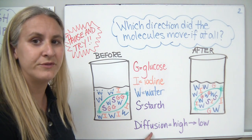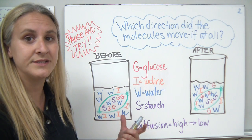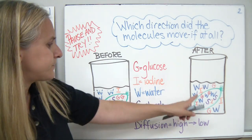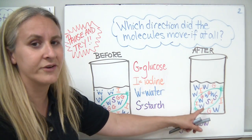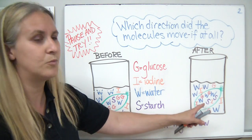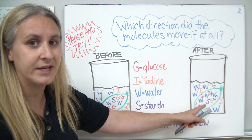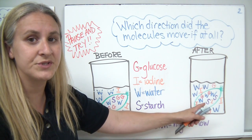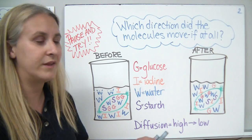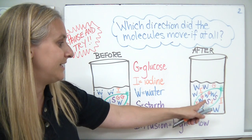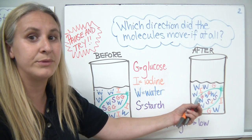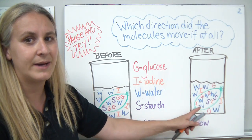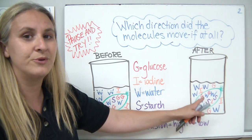Also remember, if things are moving by diffusion, they're going to want to reach what we called an equilibrium — an equal, balanced state. In our after diagram, we can see a couple of things happened. Some water diffused into the baggie from the solution, and iodine diffused into the baggie from the solution. We recognized that because when iodine reacts with starch, it turns a bluish-black color, and at the end of the experiment the inside of the baggie was a bluish-black color.